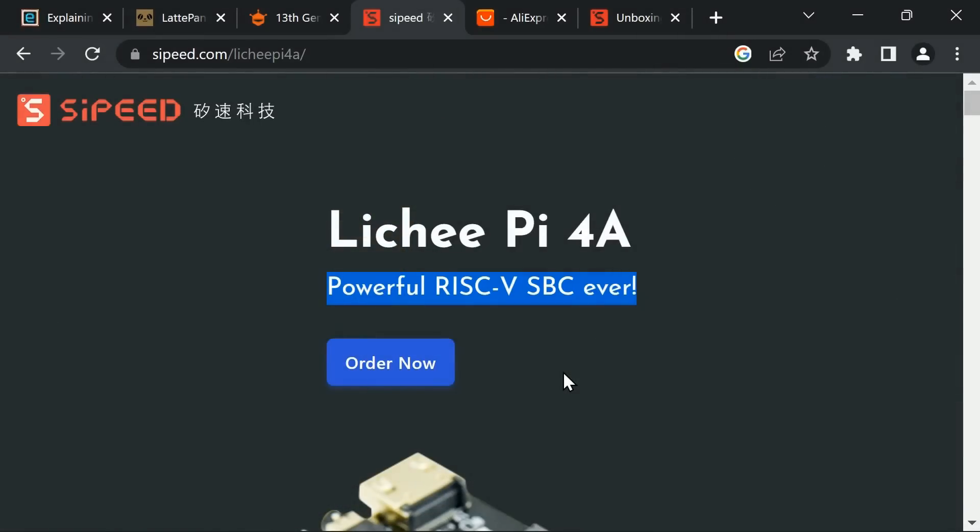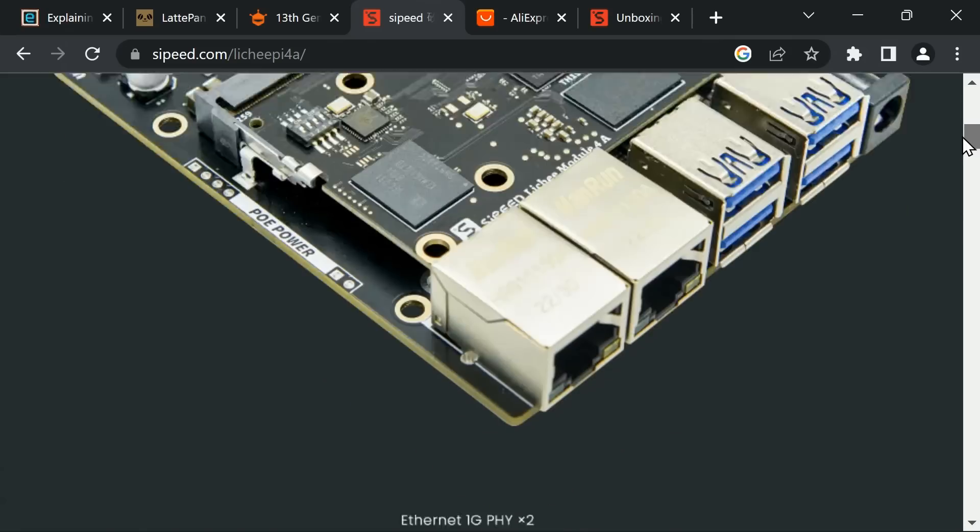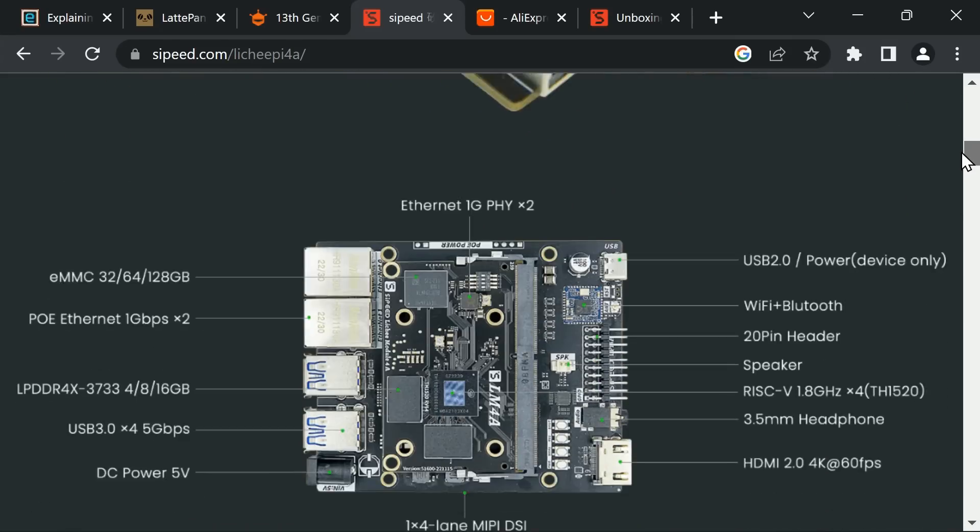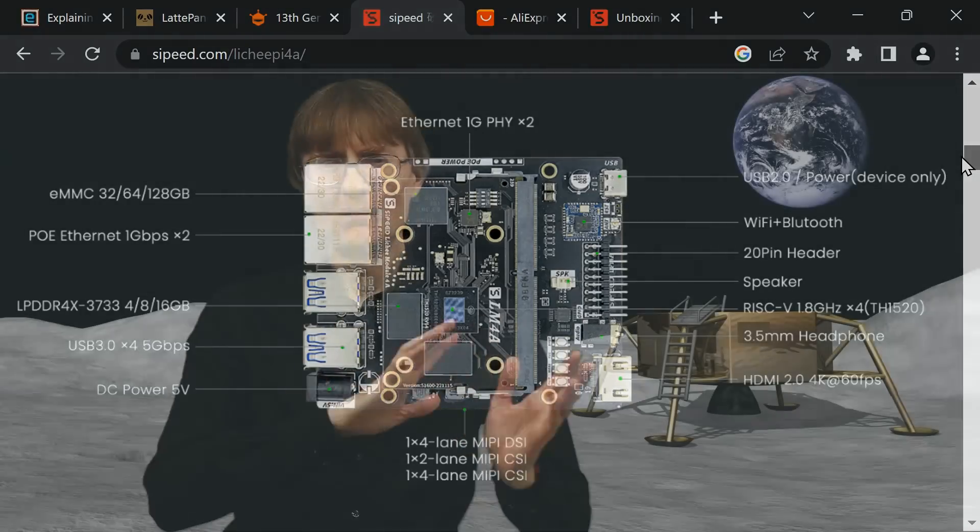Without doubt there'll be at least one more RISC-V video this year. In fact there'll be at least two. I can think of a special project I've not told you about yet, but there'll be one more I know definitely is coming up which will be the review of the Sipeed Lichee Pi 4A RISC-V single board computer, or technically two board computer because it's one of these things where a board plugs into a base board. That board's already out in a beta version, but I'm waiting to get the full version. That will be coming up fairly soon on the channel.